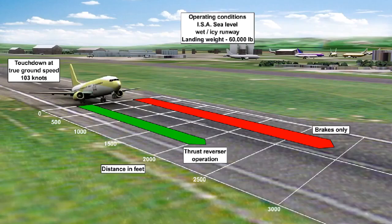This diagram compares the stopping distances involved when an aircraft lands on a wet and icy runway with and without using thrust reversal.